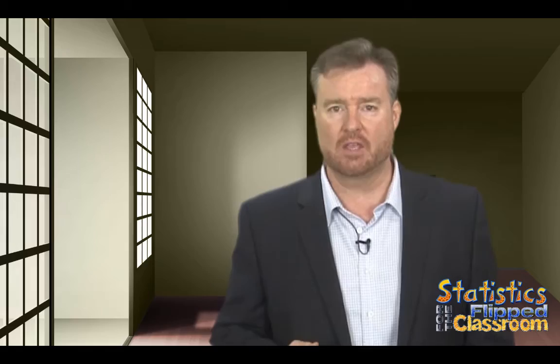On the other hand, some groups of numbers can only assume one value. They do not vary, and those are called constants. Now some values are constant because they theoretically cannot vary. For instance, a cup of liquid is 8 ounces. The curb weight of a 1976 Ford Pinto is 2,595 pounds. The earth goes around the Sun once every 24 hours.